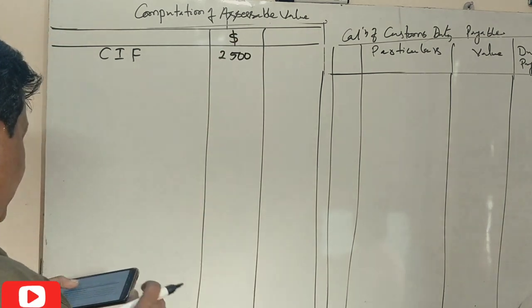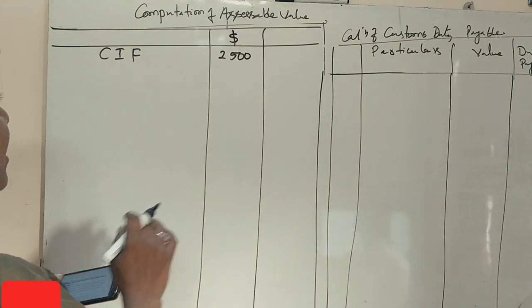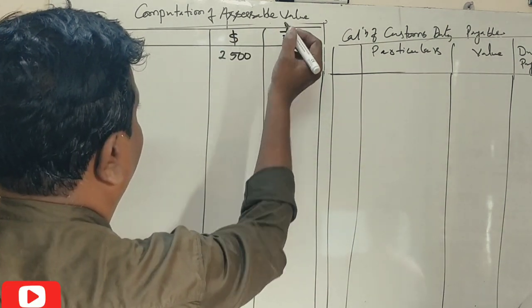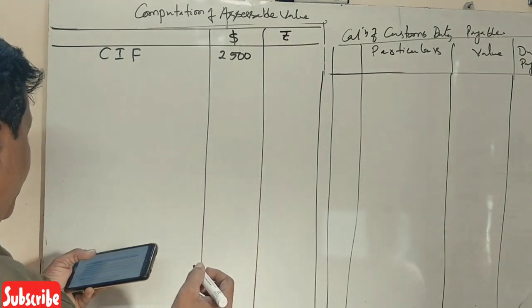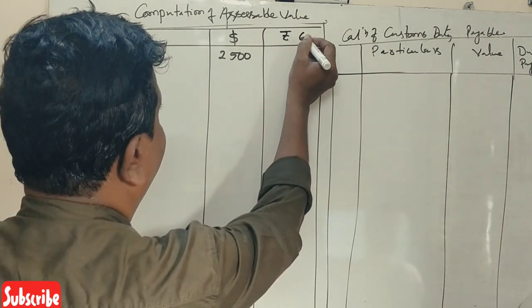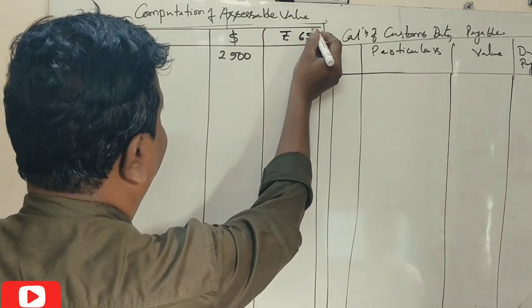The values are in dollars. Now, the exchange rate is: one dollar equals 65 Indian rupees.